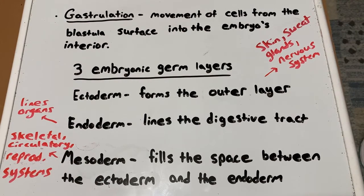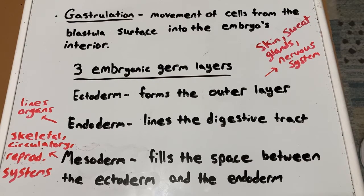Some species, such as cnidaria, will only form two layers during gastrulation — the ectoderm and the endoderm — and these species are known as dipoblasts. Dipoblasts include some coral, hydroids, box jellies, and many more. Those that produce all three layers are vertebrates, and these are known as tripoblasts.